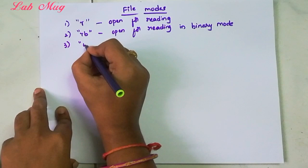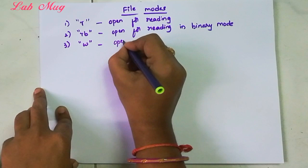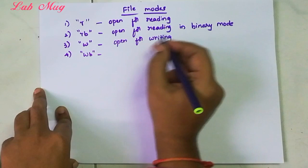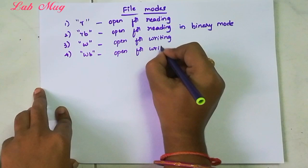Next is W. W means write, so open for writing. Next is WB - same again, open for writing in binary mode.